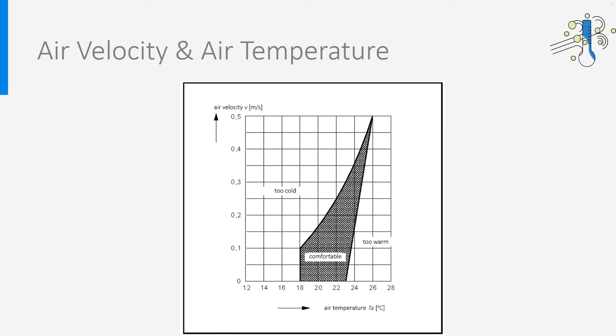If the air velocity is higher, the lower boundary of the temperature must be increased. At a velocity of 0.2 meter per second, the air temperature should be above 21 degrees, otherwise people will feel too cold. The diagram also shows that at high indoor temperatures, 26 degrees for instance, thermal comfort can only be achieved if the air velocity is increased to 0.5 meter per second.